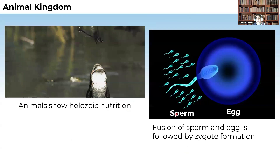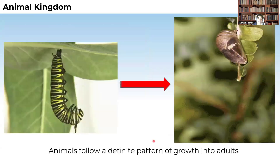In the case of animals, there will be the fusion of the sperm and the egg, resulting in the formation of the zygote. Sexual reproduction is seen in the case of higher animals. The development in animals will follow the same developmental stages as that of the parent.